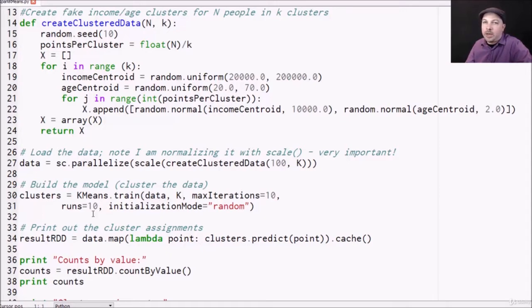a couple of parameters that put an upper bound on how much processing it's going to do. We're going to tell it to use the default initialization mode of k-means where we just randomly pick our initial centroids for our clusters before we start iterating on them. And back comes a model that we can use, we're going to call that cluster.